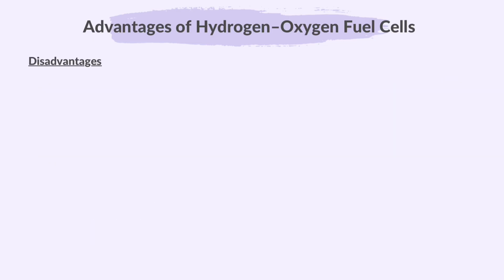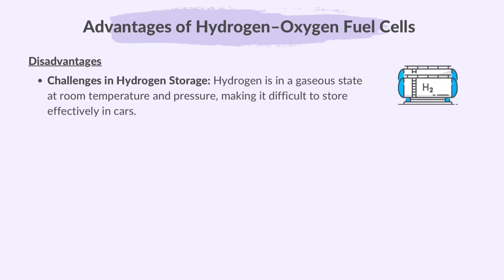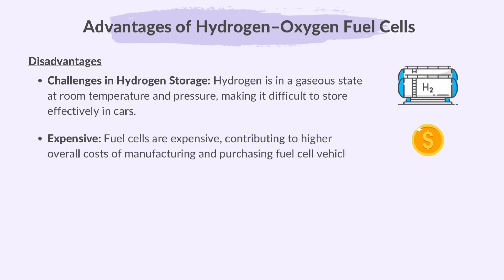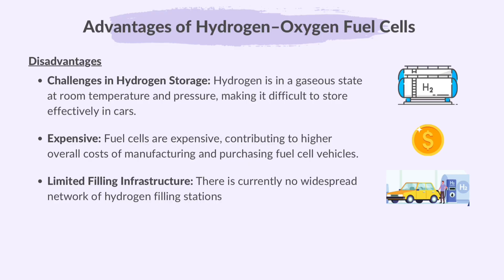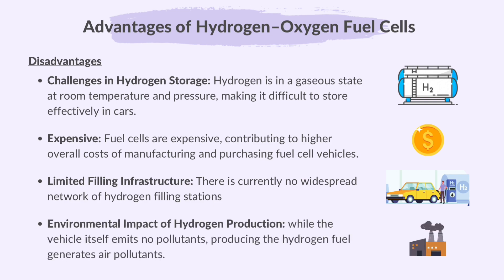The disadvantages are: Challenges in hydrogen storage — hydrogen is in a gaseous state at room temperature and pressure, making it difficult to store effectively in cars. Expensive — fuel cells are expensive, contributing to higher overall costs of manufacturing and purchasing fuel cell vehicles. Limited filling infrastructure — there is currently no widespread network of hydrogen filling stations, limiting the convenience and accessibility of refuelling. Environmental impact of hydrogen production — while the vehicle itself emits no pollutants, producing the hydrogen fuel generates air pollutants.